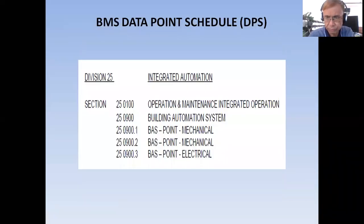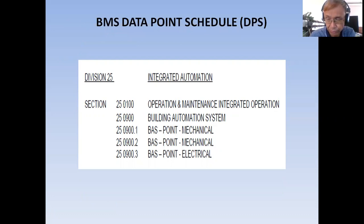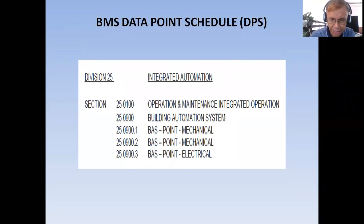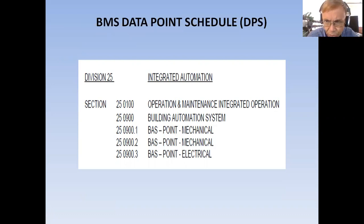Under Division 25 — Integrated Automation — Section 250100 covers operation and maintenance. Section 250900 is the specific specification for building automation systems. You have to go to Division 25, Section 0900. In this section you will find BMS points for mechanical systems and BMS points for electrical systems — three sections showing the building automation points for mechanical equipment and electrical systems.